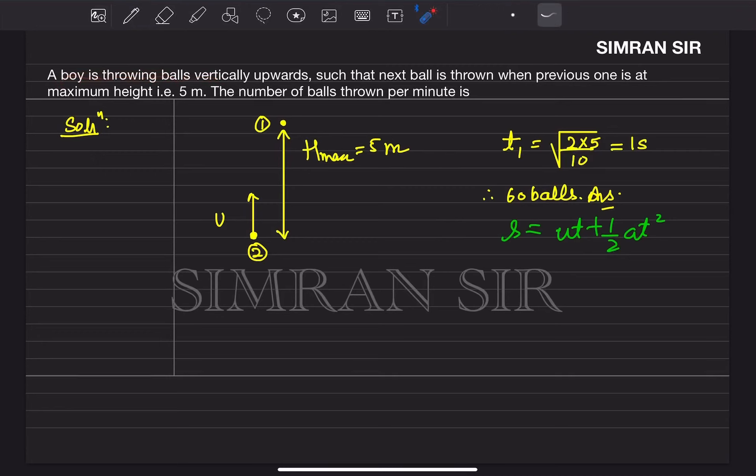A boy is throwing balls vertically upwards such that the next ball is thrown when the previous one is at maximum height, 5 meters. The number of balls thrown per minute is...